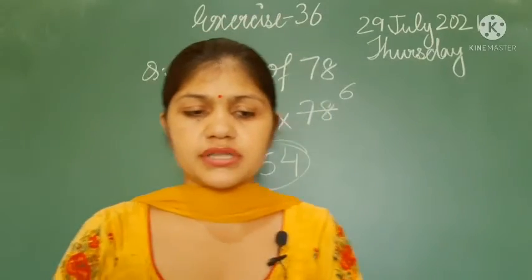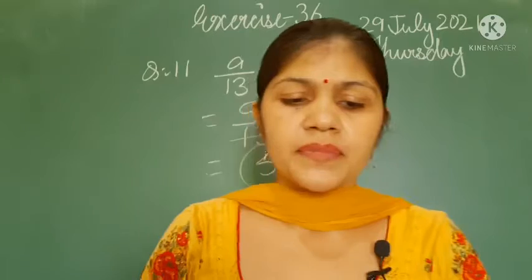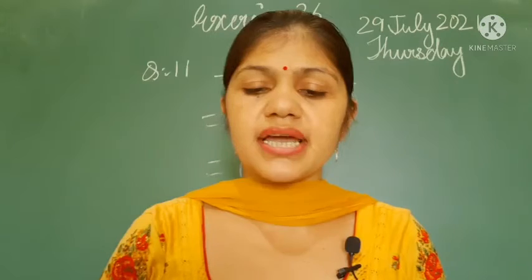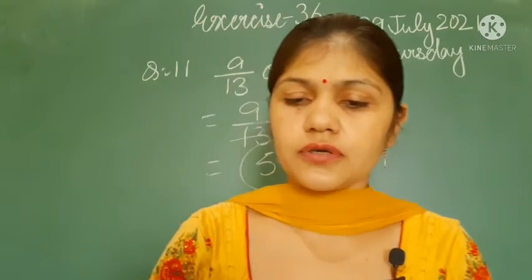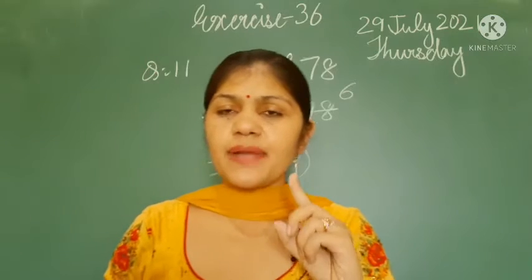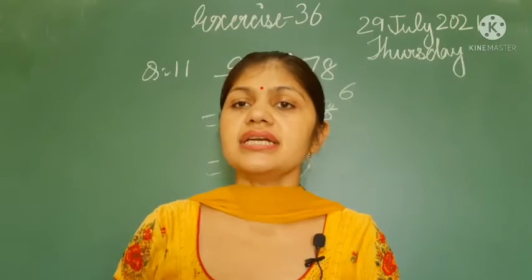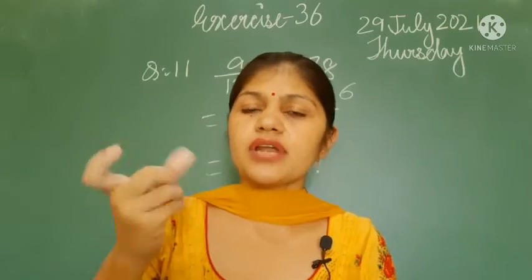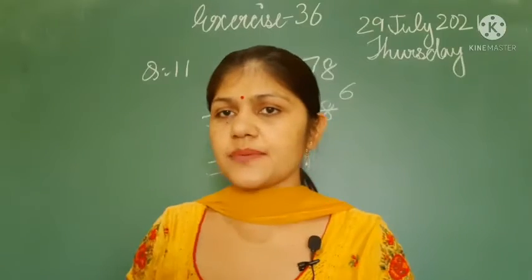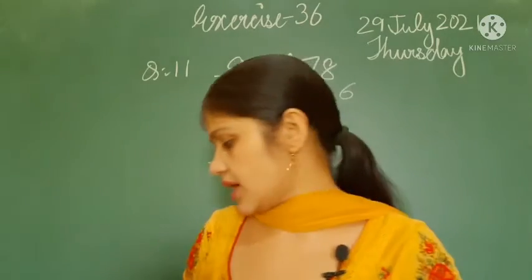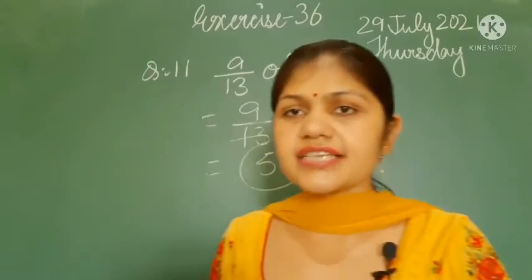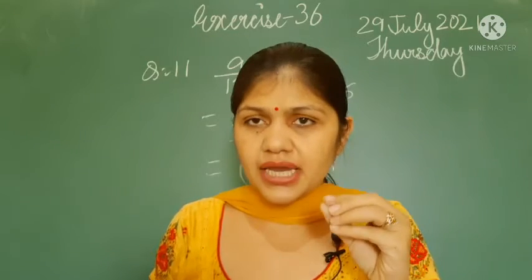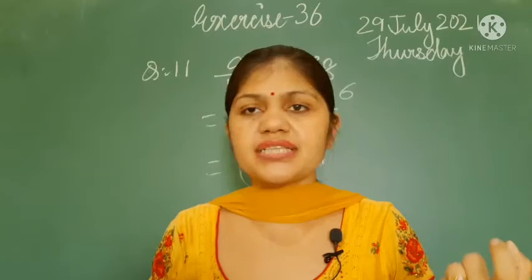Question number 13 is a statement problem. A bag can hold 96 kg of sugar. How much sugar is there when the bag is 5 by 8 full? The quantity of sugar in the bag is 96 kg. When the bag is 5 by 8 full, it means 5 by 8 of 96, and 'of' means multiplication.